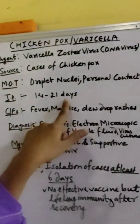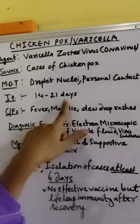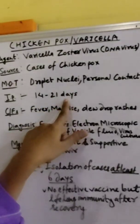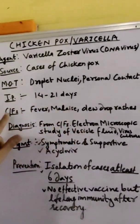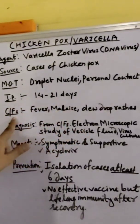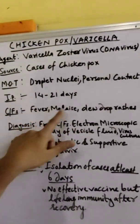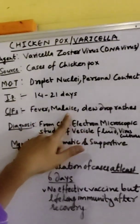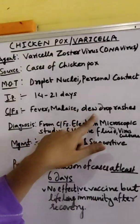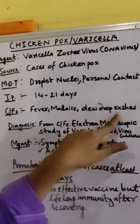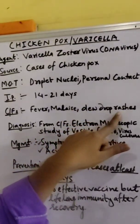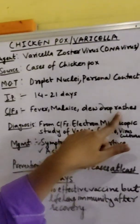First signs will be seen between 14 to 21 days. Clinical features include fever, malaise, muscle pain, and dew drop rashes. In the case of chickenpox, those who suffer will develop dew drop rashes.